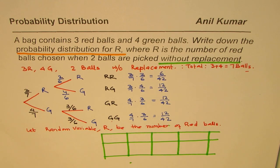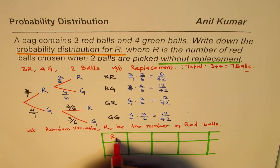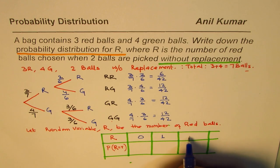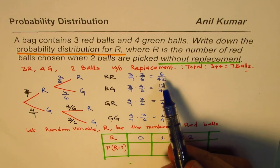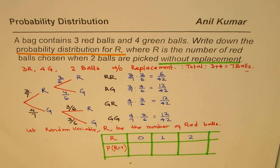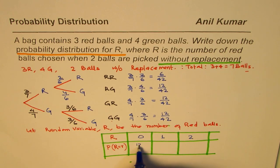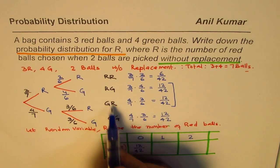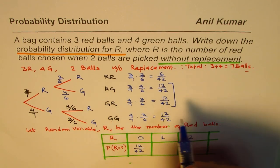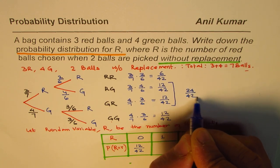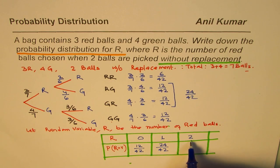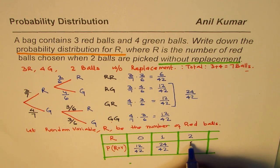We are looking for the probabilities when we have no red ball, one red ball, and two red balls. R is a random variable with possible values zero, one, or two. For zero — no red ball means two green balls — it is 12 over 42. For one red ball, both cases combine: red-green and green-red give us 24 over 42. Getting two red balls gives 6 over 42.